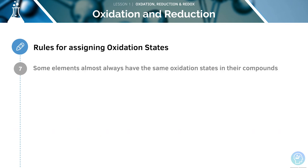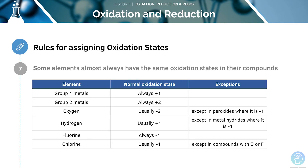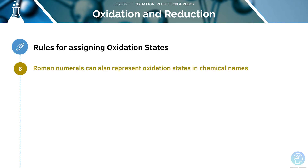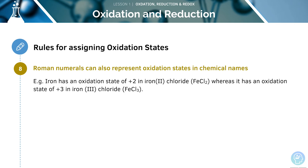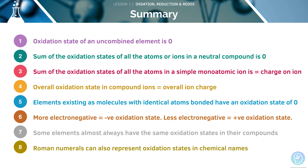Some elements almost always have the same oxidation states in their compounds — we can see a table of these here. For example, group 2 metals will always have an oxidation state of +2. Our final rule is that Roman numerals can also represent oxidation states in chemical names. Here's a useful summary of our eight rules — feel free to pause the video now and take a quick note of them for your revision.